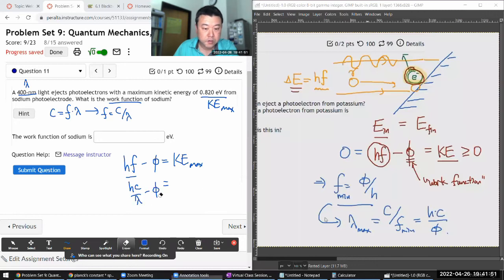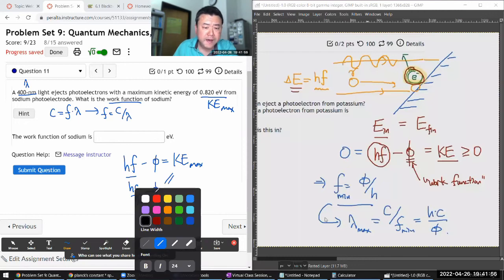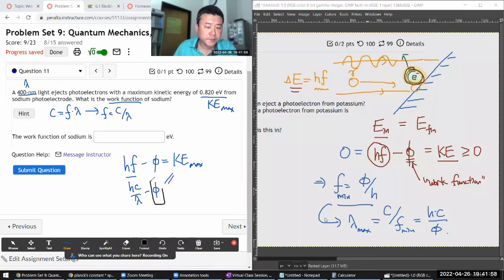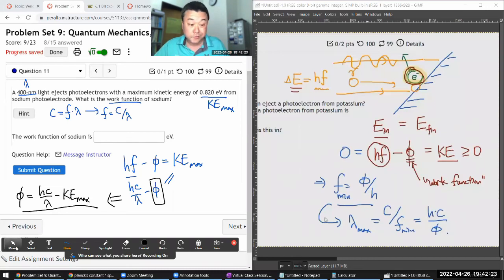Is equal to that maximum kinetic energy. So all I have to do is solve this for the work function. Doing that, I'm moving this over, moving the maximum kinetic energy over. The work function is equal to the photon energy, not divided, subtracted by the maximum kinetic energy. So that's it. I think I have everything in a form where I can plug the numbers into Wolfram Alpha.